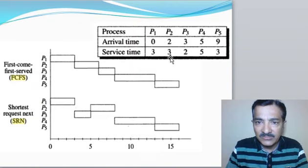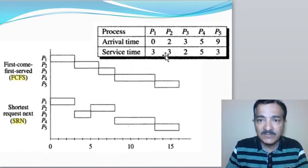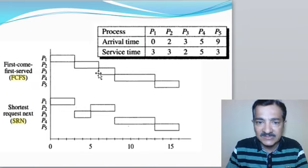Process 2 arrives at 2 seconds but will start execution at 3 seconds because process 1 must complete first. From 3 seconds it executes for the next 3 seconds, since the service time for process 2 is 3 seconds. The service time for process 3 is 2 seconds, so it starts executing at 3 plus 3 equals 6 seconds, and executes for the next 2 seconds, completing at 8 seconds.